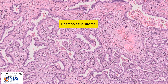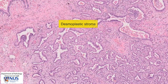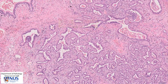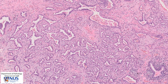This is desmoplastic stroma, which is a little more cellular, showing fibroblast proliferation and inflammatory cells — classically associated with invasive carcinoma. So we can appreciate the architecture of abnormal, complex, branching, angulated, irregular glands, and we can appreciate the desmoplastic stroma.